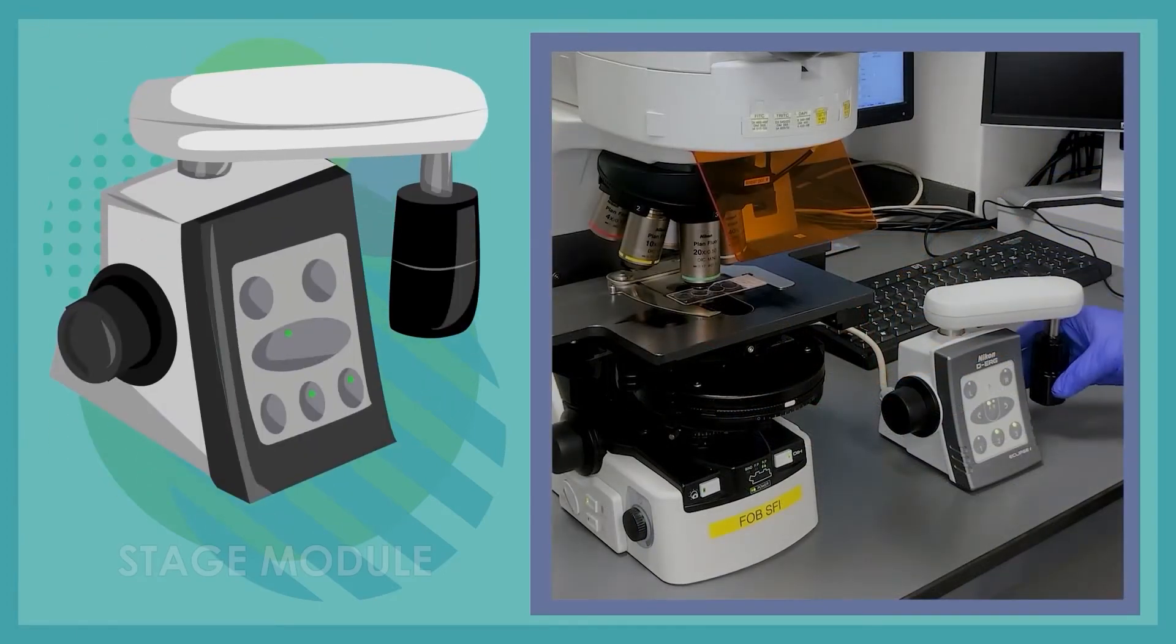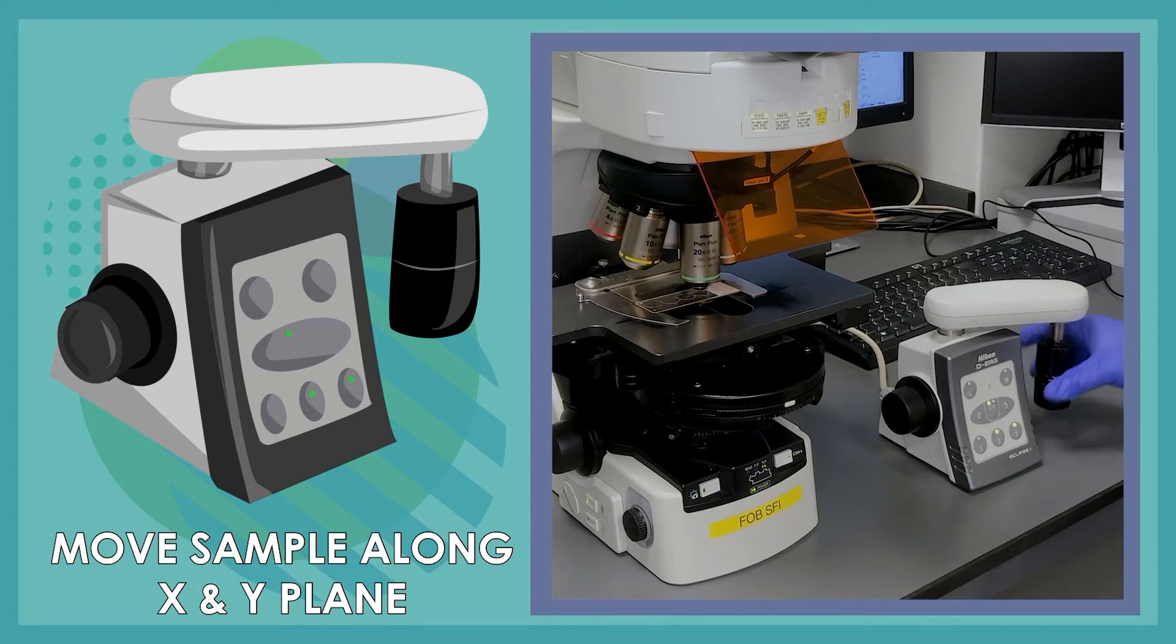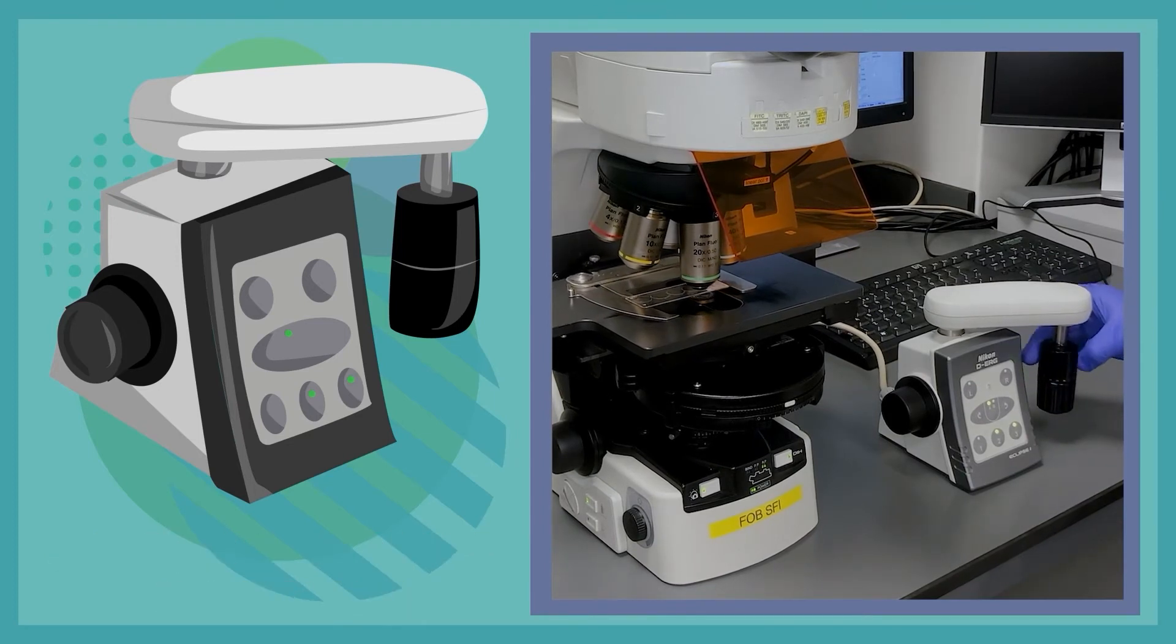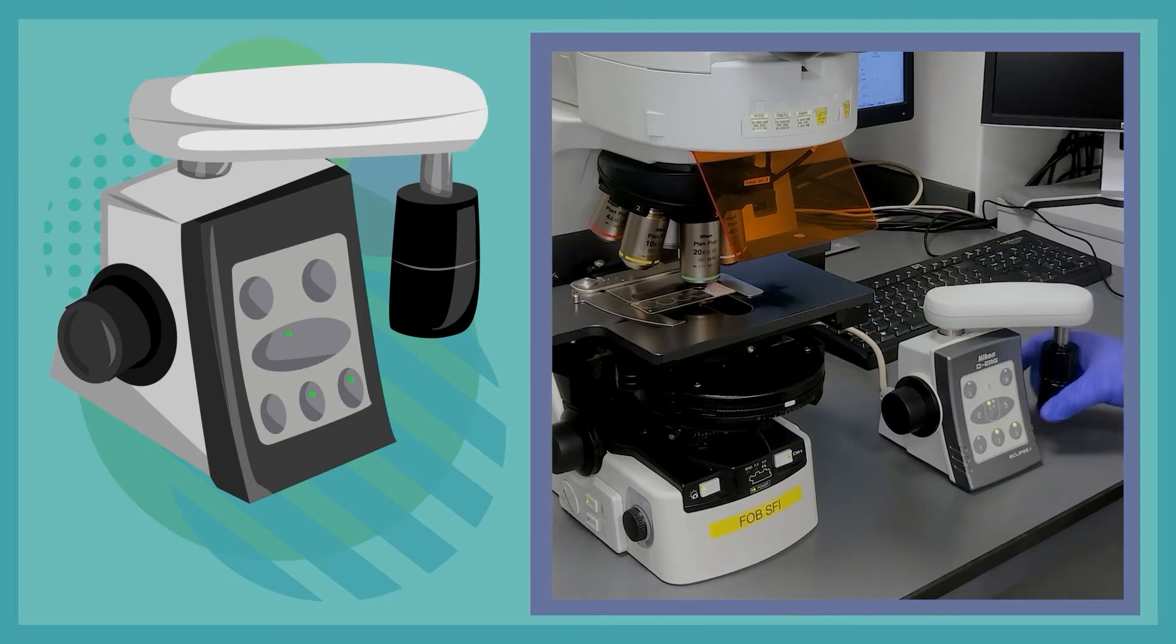This is also the stage module that allows us to move our sample in an x and y plane under the objective lens pieces. This allows us to look at different regions of interest of our sample under the microscope.